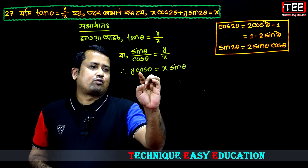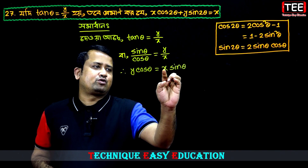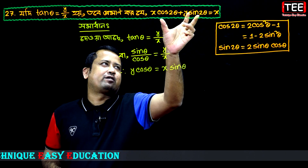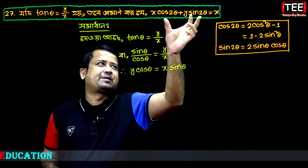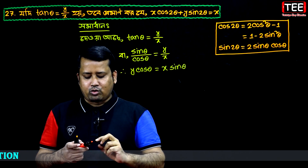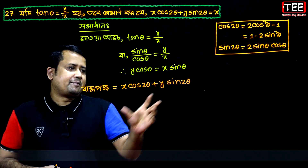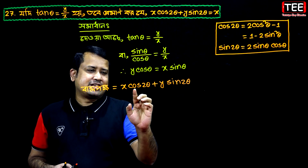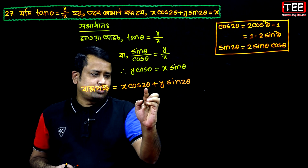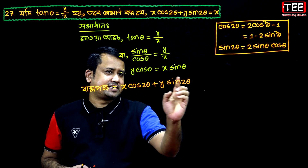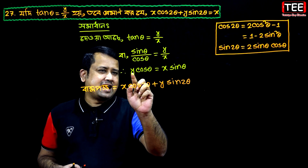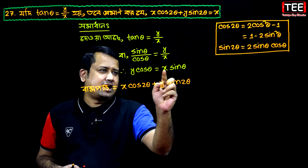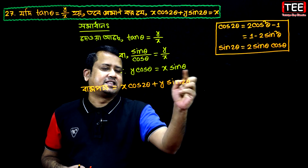y cos θ equals x sin θ. So we also have that η equals x. That is why we consider the relationship between x and x cos θ with x sin θ. And here we say that y cos θ is equal to x sin θ.